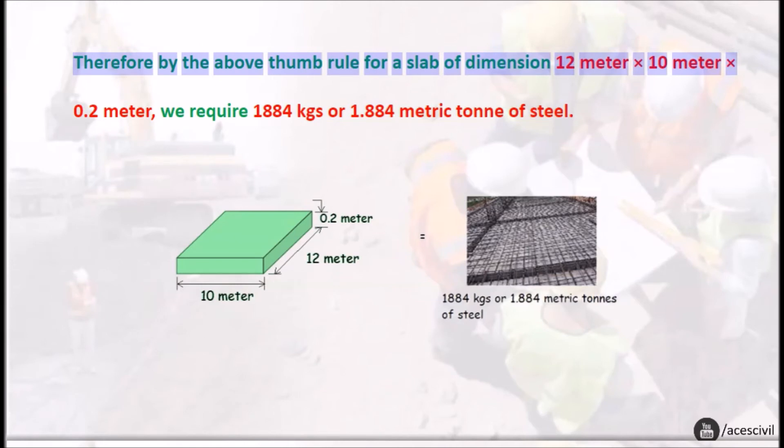Therefore, by the above thumb rule, for a slab of dimension 12 meter times 10 meter times 0.2 meter, we require 1884 kgs or 1.884 metric ton of steel.